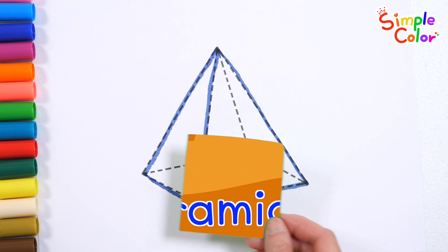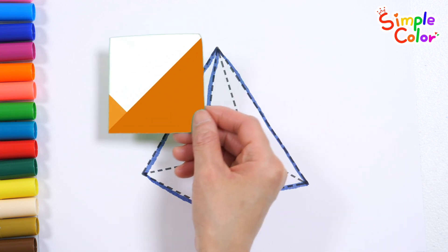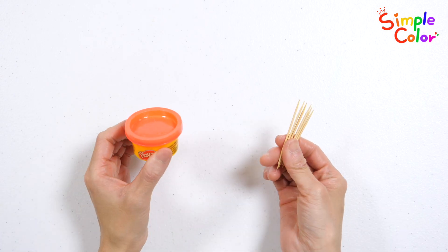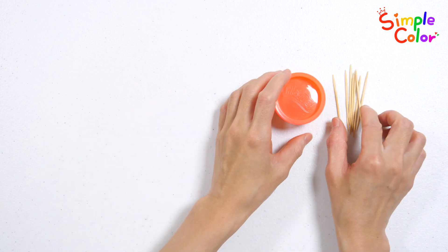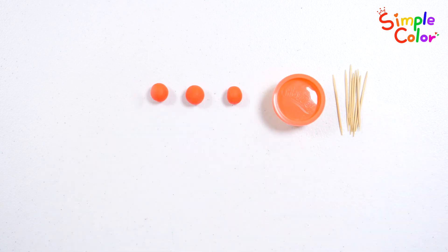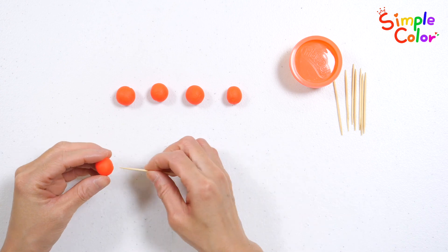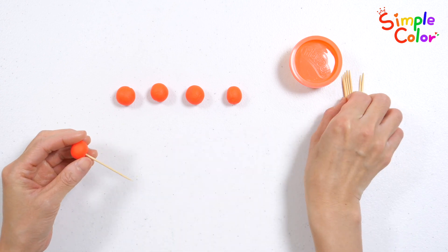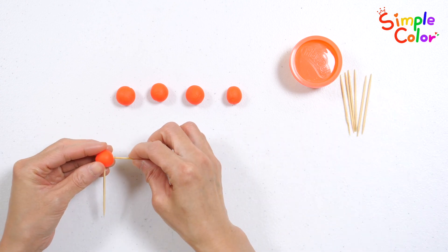Pyramid. This time, let's make a pyramid shape. Make five circles with orange clay. Let's connect sticks and clay.